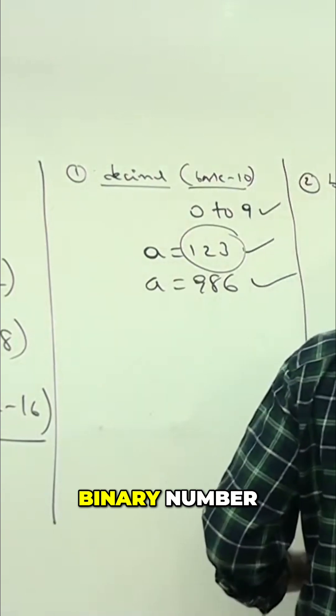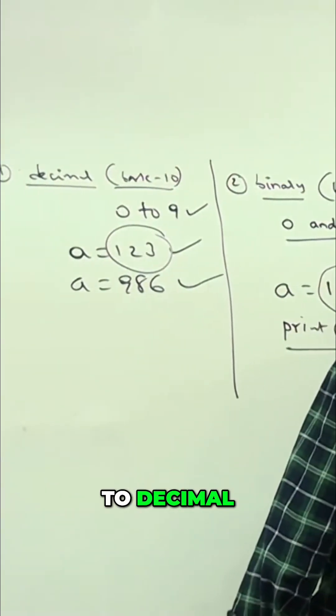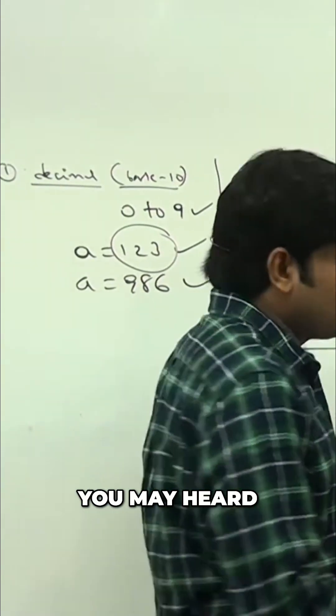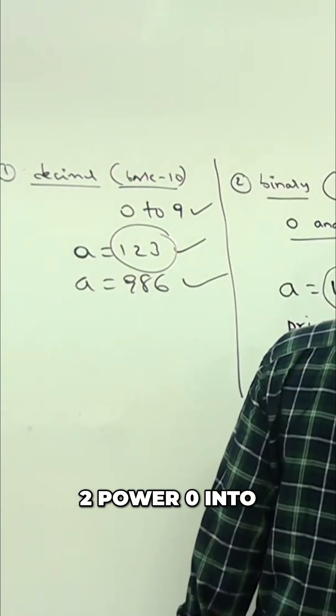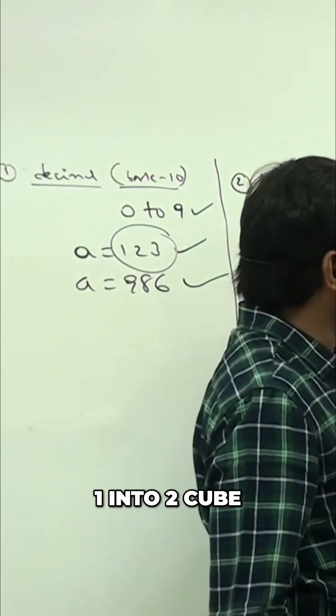Two power zero, two power one, two square, two cube. Like one into two cube equals eight, plus one into two square equals four, plus one into two power one equals two, plus one into two power zero equals one.